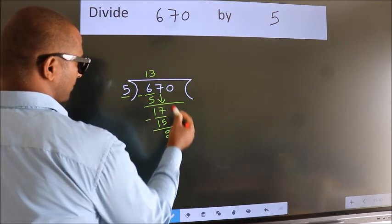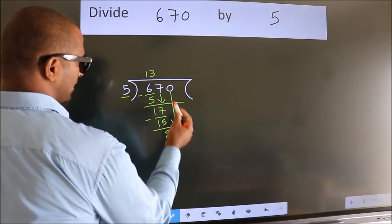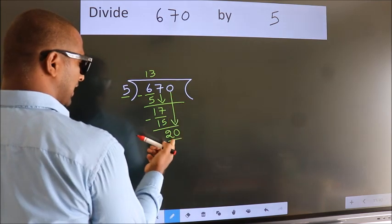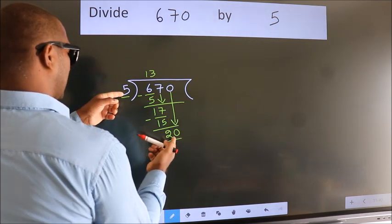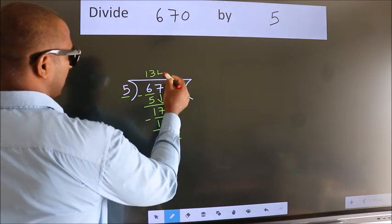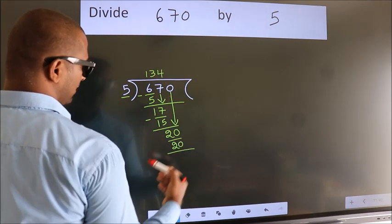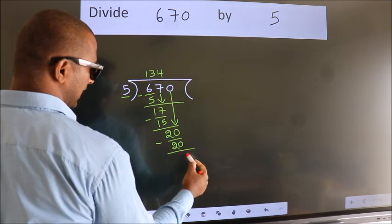After this, bring down the beside number. So 0 down. So 20. When do we get 20? In 5 table. 5 fourths, 20. Now we subtract. We get 0.